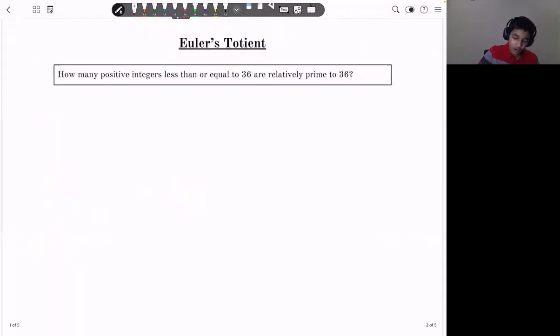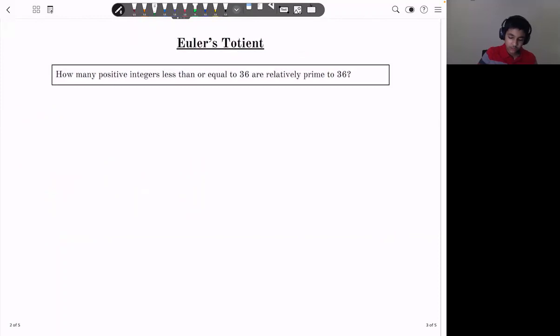So now let's explore a method called Euler's totient. How many positive integers less than 36 or equal to relatively prime to 36? Just like earlier, 36 is 2 squared times 3 squared.